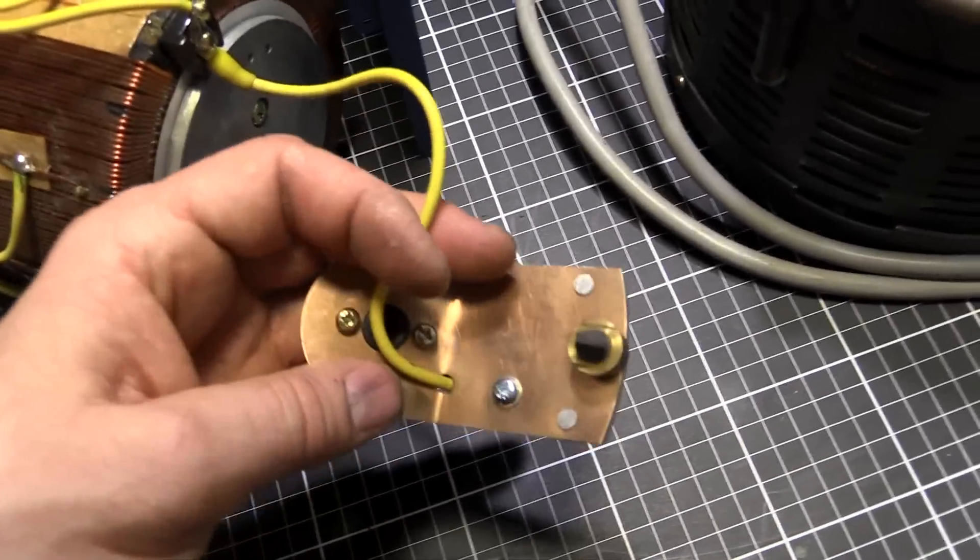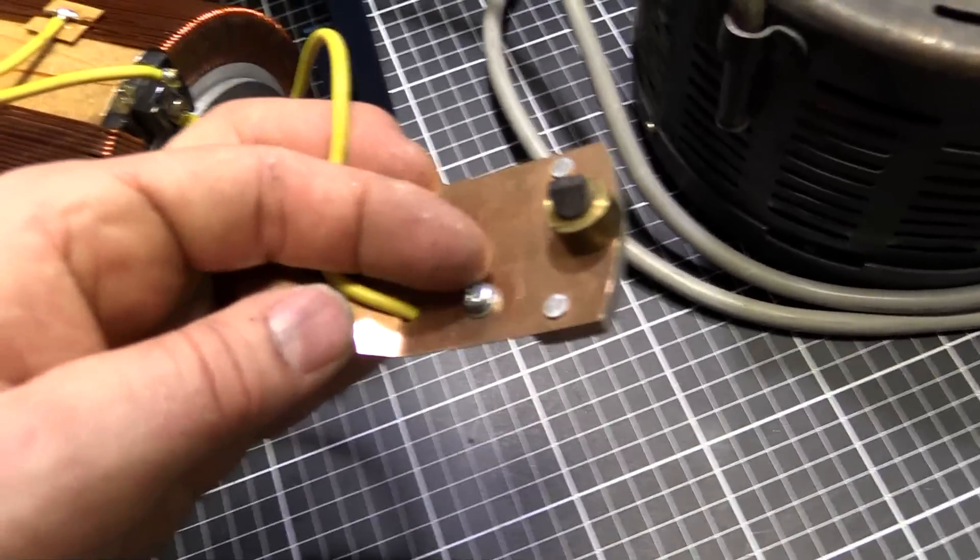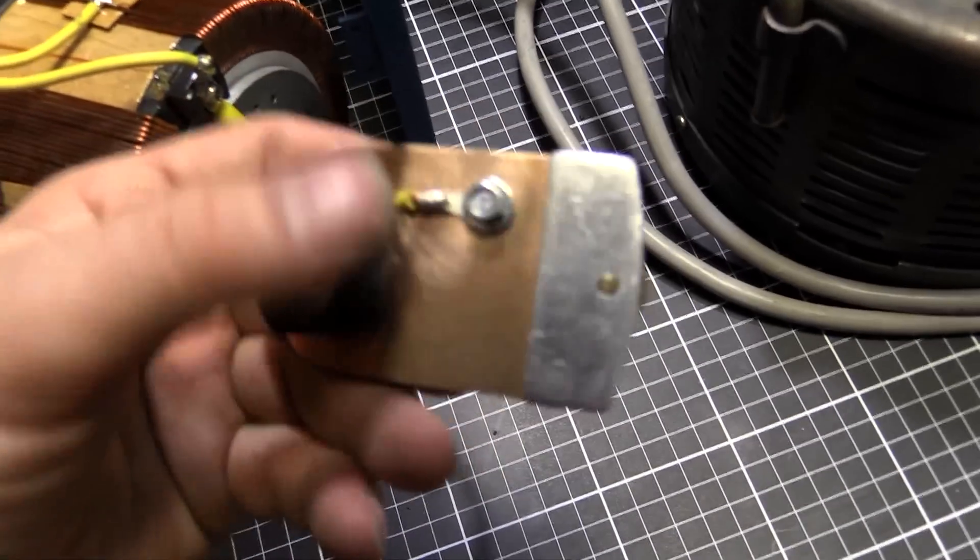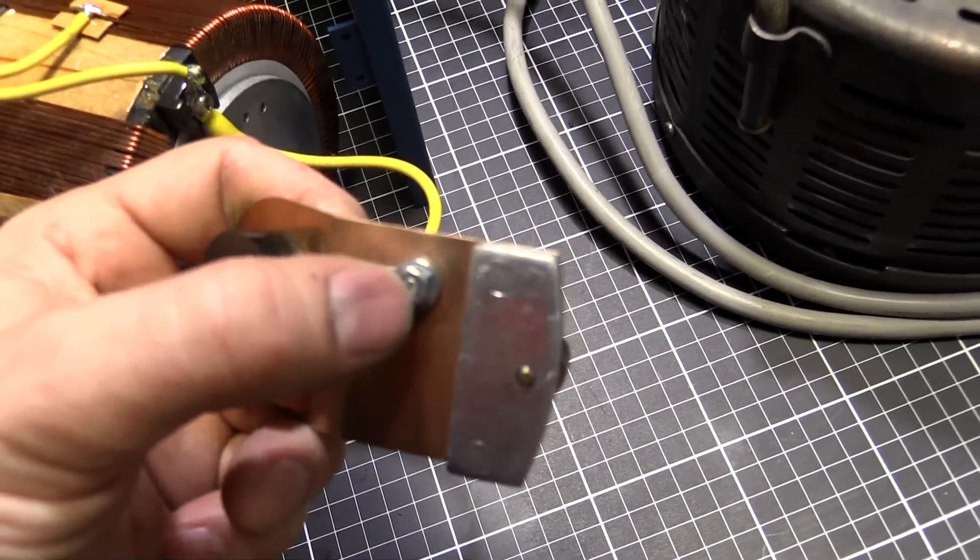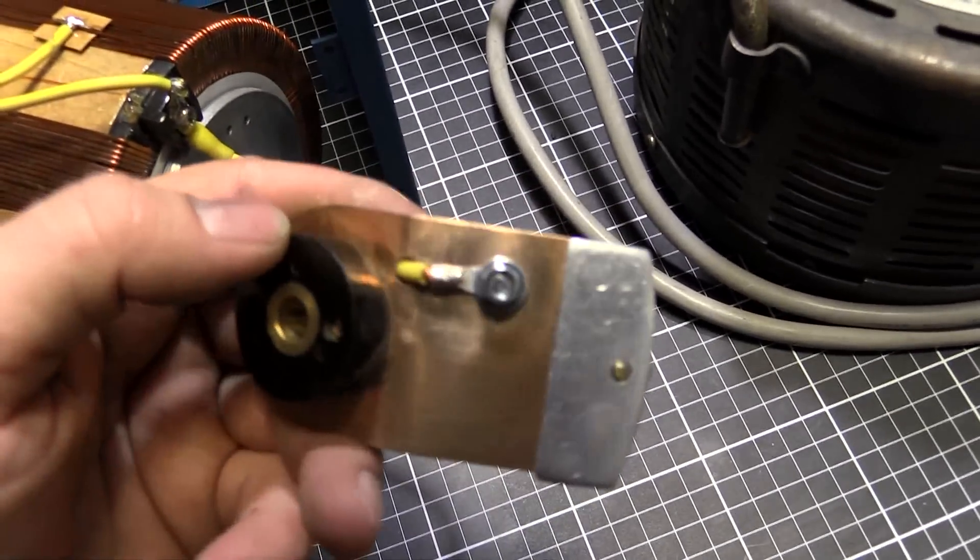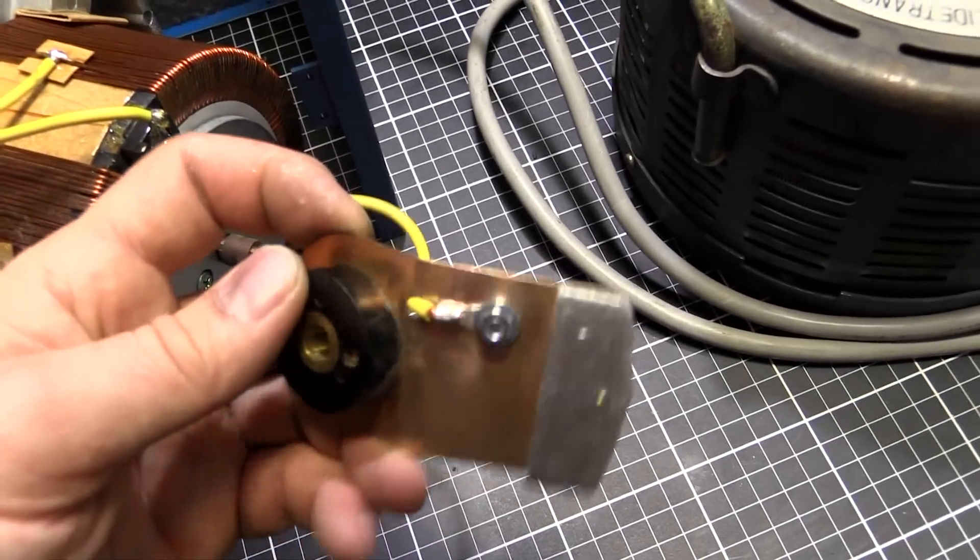And there we go. Just a nice crimp on there. Got a star washer on the back to give it a bit of grip into the metal. Nicely crimped. A bit of Loctite in there too, so it won't come loose with all the motion. So we'll put this back together and hopefully it'll work.